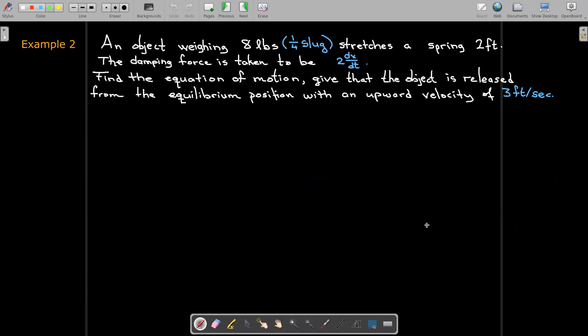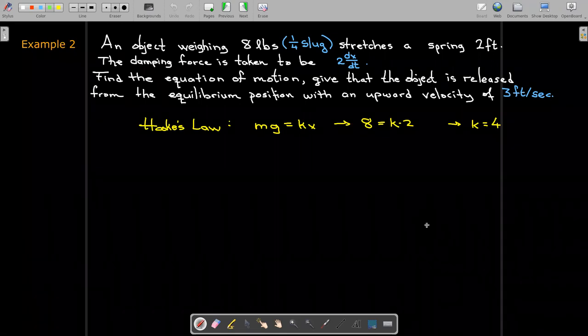So here we're given another example. We're told its weight, which is 8 pounds. 8 pounds would be a quarter of a slug. It stretches a spring 2 feet. So that should be enough information to calculate the spring constant. We're told that the damping force is going to be 2 times dx/dt, and we'd like to find the equation of motion, given that the object is released from the equilibrium position with an upward velocity of 3 feet per second. So Hooke's law will help us determine the spring constant from the information that's given. Its weight has to equal the restoring force of the spring, and that gives us a spring constant of k equals 4.